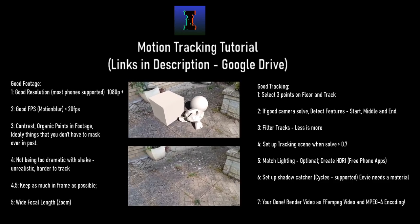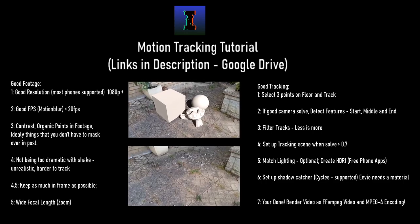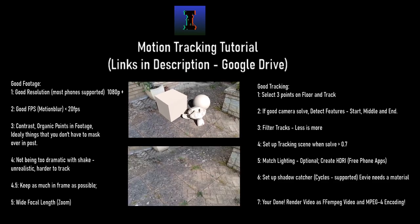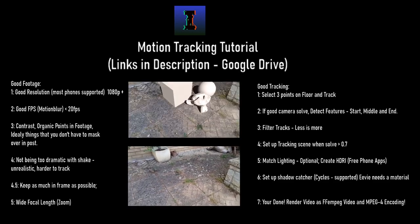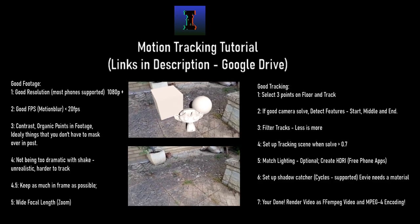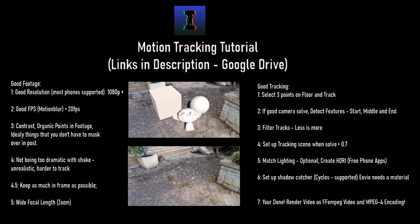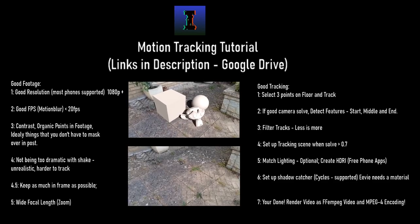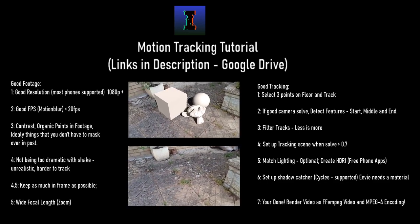Match the lighting. In this scene I didn't light it very well because of the shadow catcher needing the sun, but you could make an HDRI, do a panorama of your scene, or just eyeball it. There are free phone apps to create HDRIs — I'll link tutorials in the description. Set up shadow catcher — Cycles is supported natively. If you want to render in Eevee, which basically means seconds instead of hours, you need to make a material for the shadow catcher. Then render video as FFmpeg video with MPEG-4 encoding.